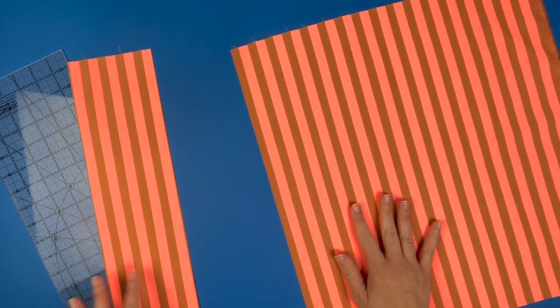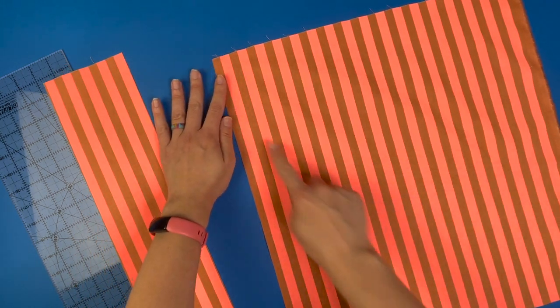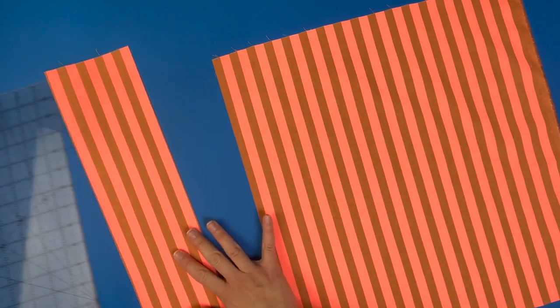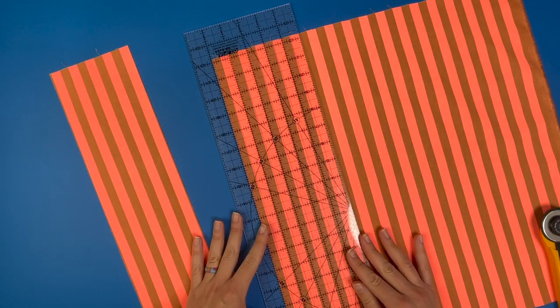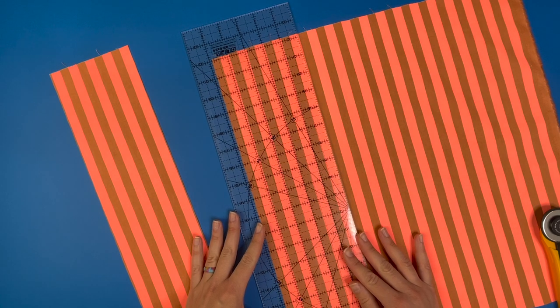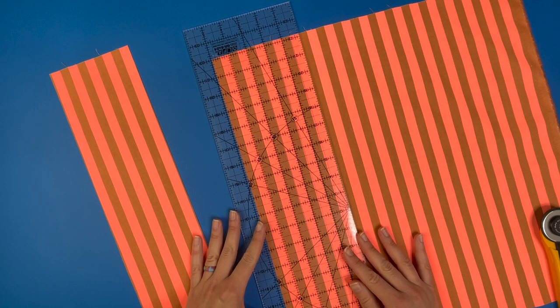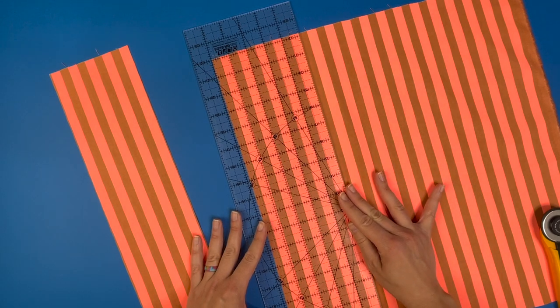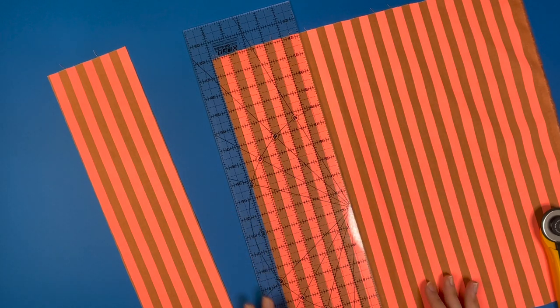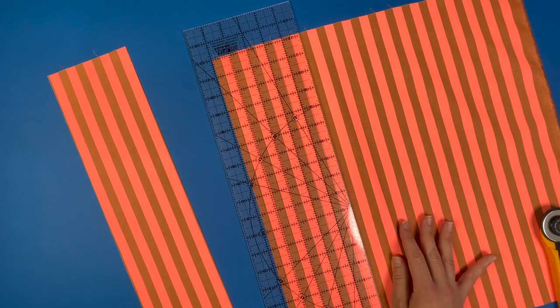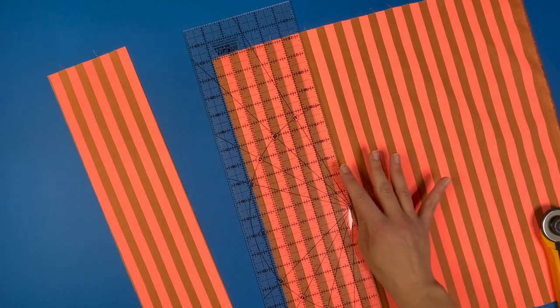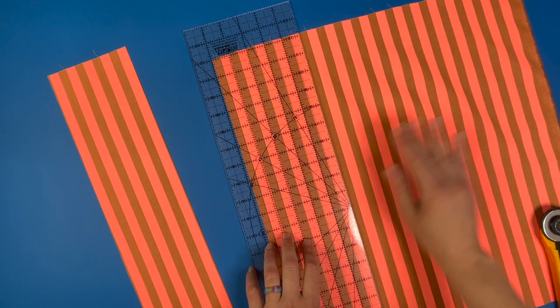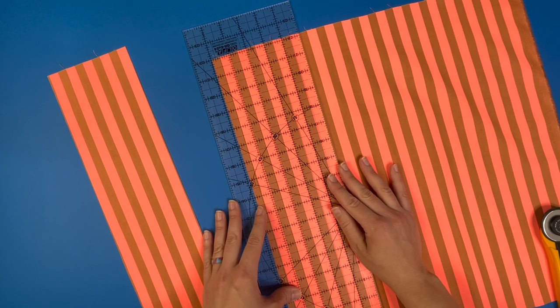Now there's going to be some waste because we're going to cut off the end here. So we can start. We're going to again line up on the neon and if you need to adjust your fabric over to get things perfectly straight underneath your ruler.